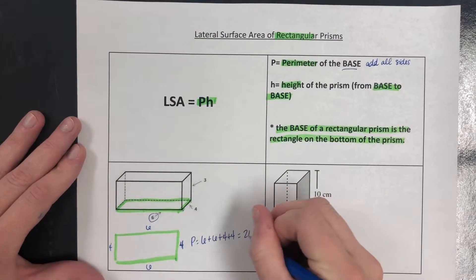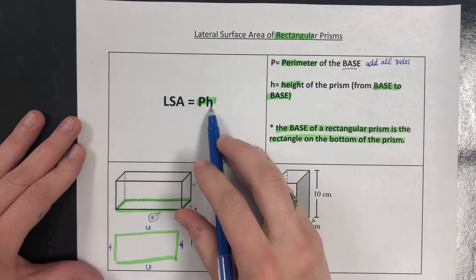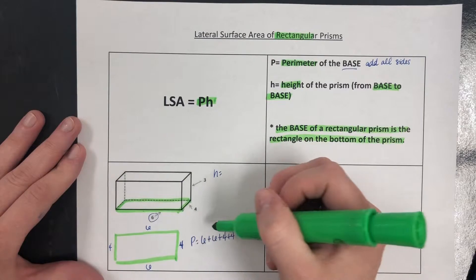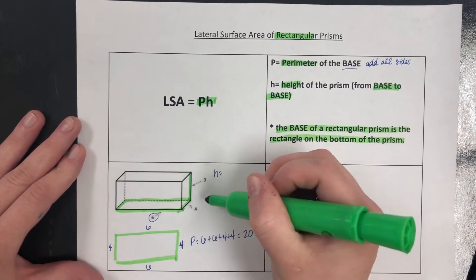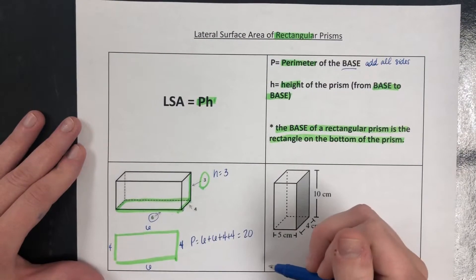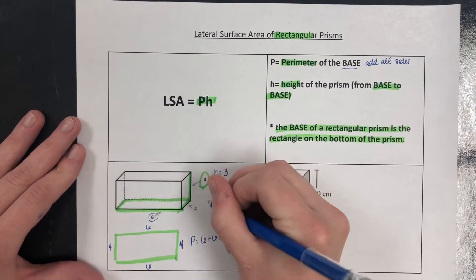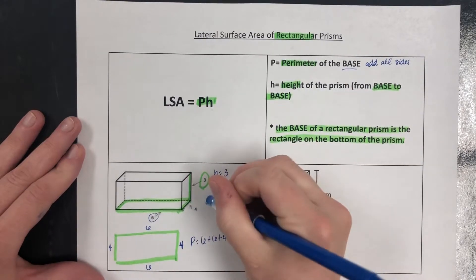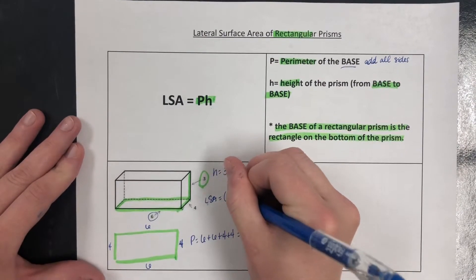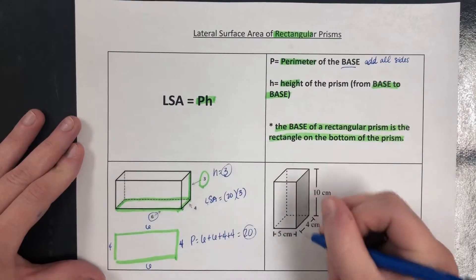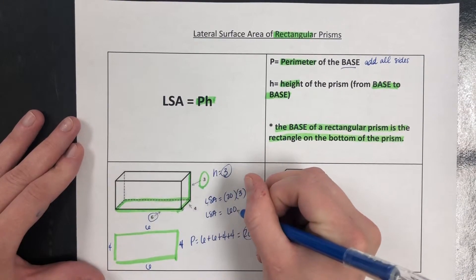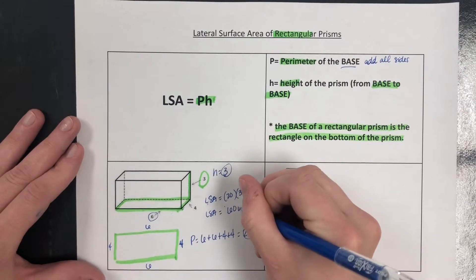We're going to get 20, and then the only other piece we need is the height of the prism from base to base. The base is on the bottom, so that means the top is going to be the other base. From base to base it is three in this case. Now we take everything that we have, our P and our H, and we plug it into the formula. Lateral surface area equals P, which is 20, times H, which is 3. You just type it into your calculator: 20 times 3, and you get 60. There's no unit listed here, so we'll just say 60 units squared.